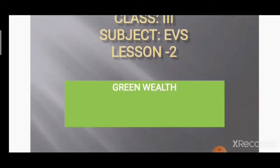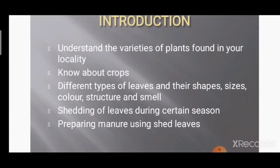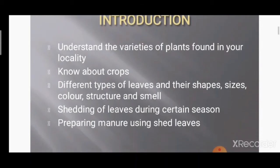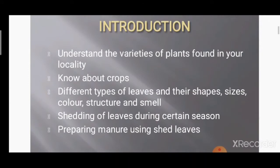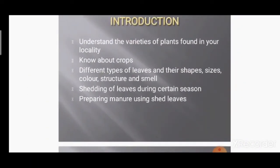For the second chapter, 'Green Wealth,' we need to understand the varieties of plants found in your locality. Plants are different types — their shape is different, their size is different. We need to find about the crops, different types of leaves — some are big, some are small, round shapes, different types. We also learn about the shedding of leaves during certain seasons and preparing manure using shed leaves.